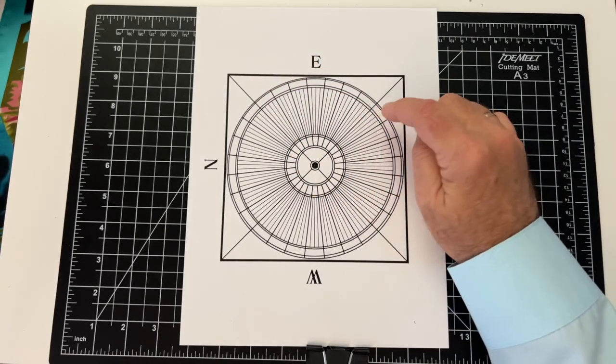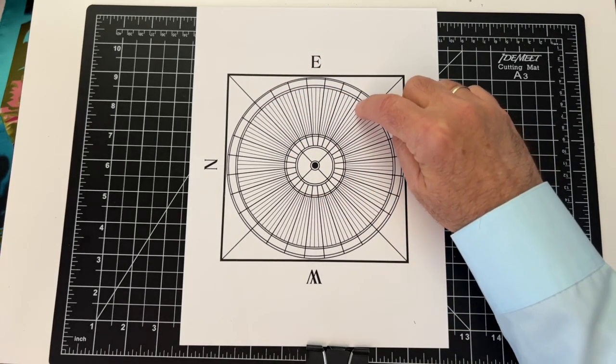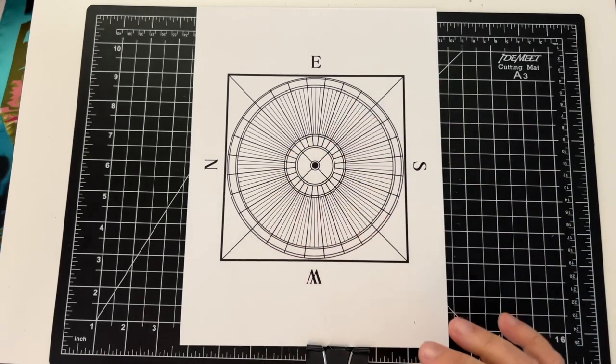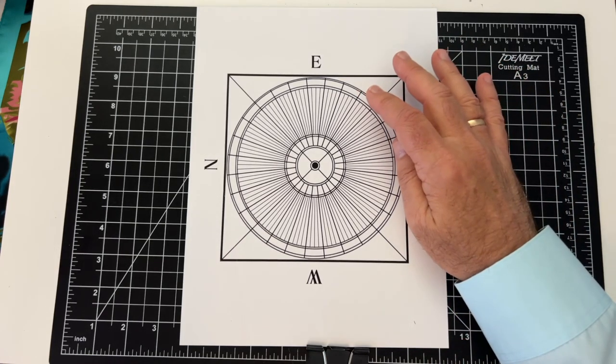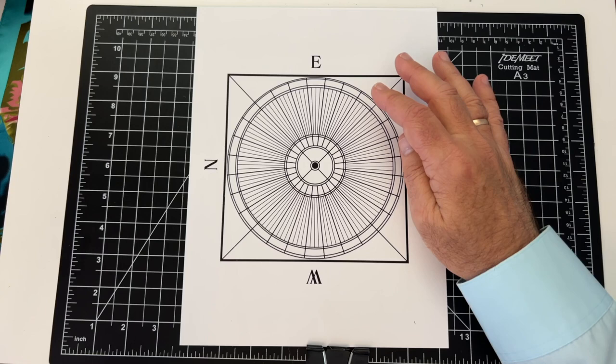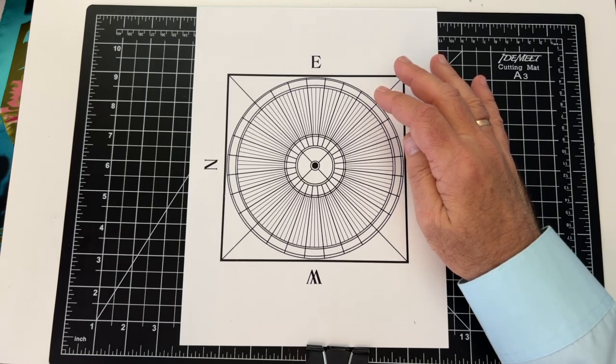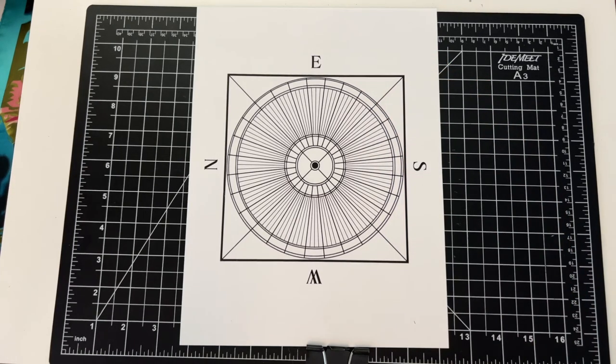And then each of those sections you divide into four: one, two, three, four. And you do that all the way around. What this means is that we have 28 sections and each of those 28 sections are further divided into four, resulting in a total of 112 sections to complete the circle.